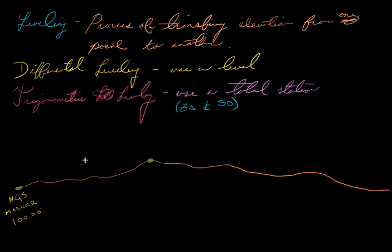We want to transfer this elevation to this next point. How do we figure out what this next point is? Well, we set up our level. There's our level. We use something called an elevation rod or a filly rod. It looks like this. They go up to, I think, most go up to like 25 feet. Starting at zero at the bottom and going up to 25 feet.